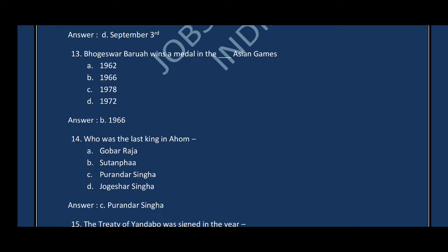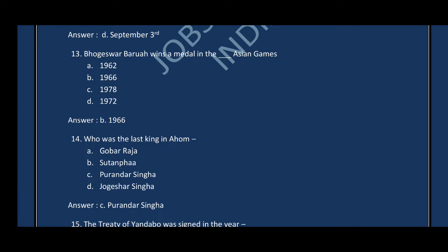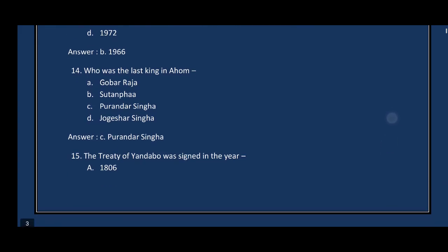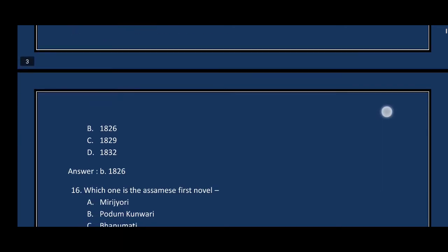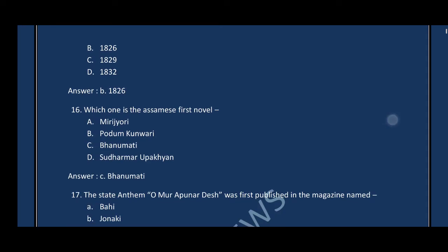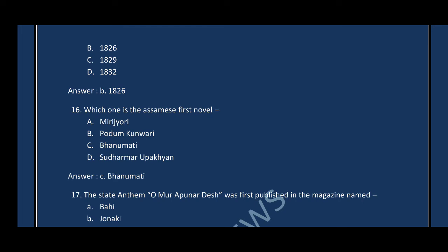Question number fifteen: The Treaty of Yandaboo was signed in which year? Question number sixteen: Which one is the first Assamese novel?